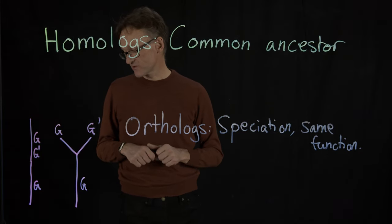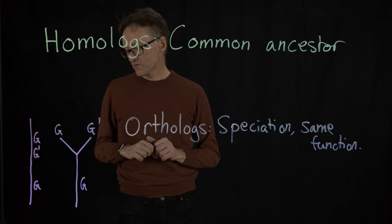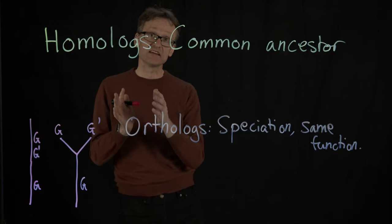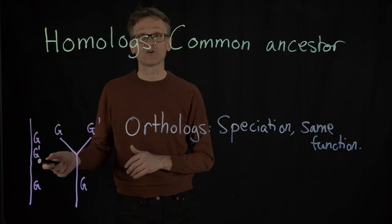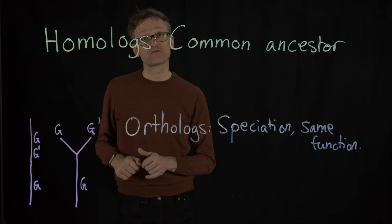Myoglobin and hemoglobin—hemoglobin has four subunits, but the individual gene in hemoglobin is similar to the individual gene of myoglobin, one subunit, but they don't perform exactly the same function, right?